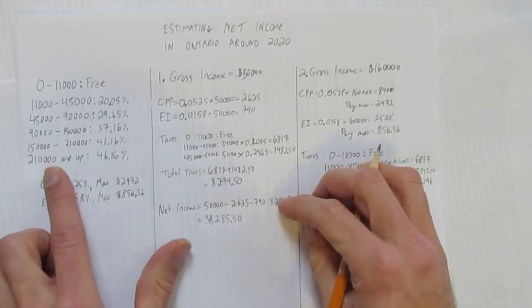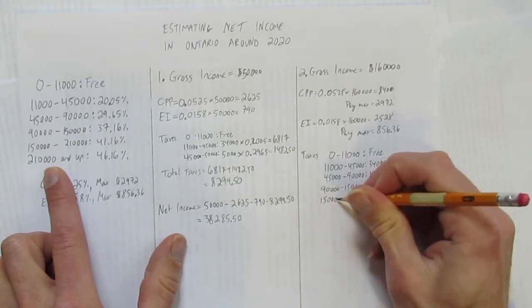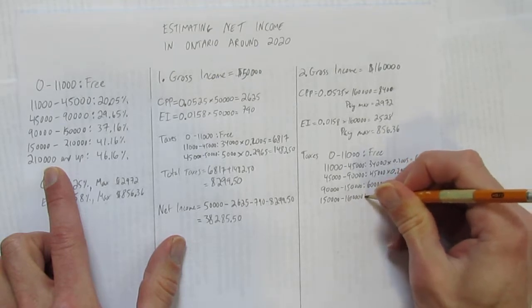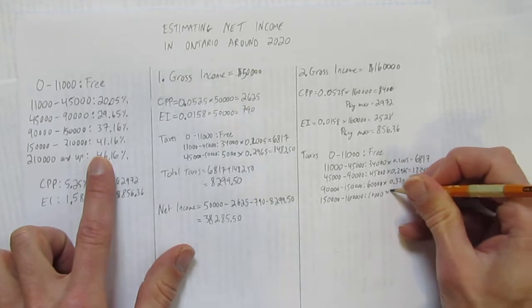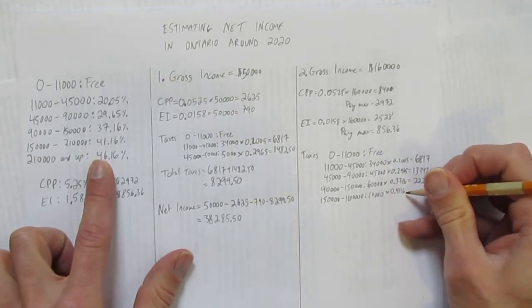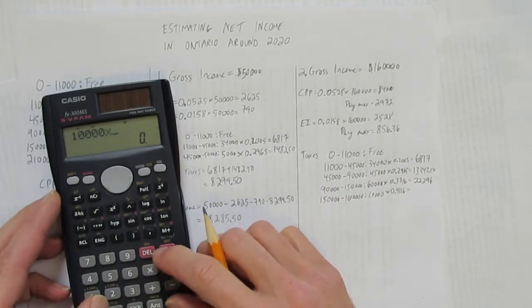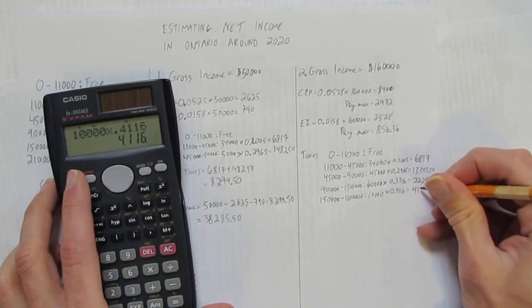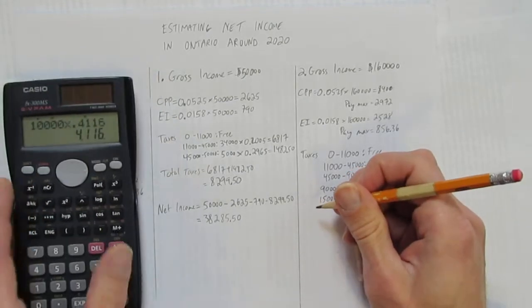And we're at the end of their brackets, they never get to this $210,000 up, but they have $150,000 to $160,000, because that's the limit on their income. They have $10,000 in this bracket, and that gets taxed at 41.16% as a decimal. That's 0.4116. So what's $10,000 times 0.4116? That's $4,116. That's how tax brackets work.